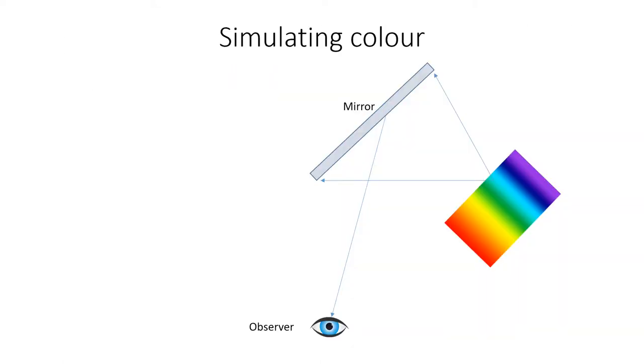As the eye sees color only in terms of its red, green and blue components, it's possible to make the eye believe that it's seeing different amounts of colors by adding suitable amounts of red, green and blue light. If the relative amounts of red, green and blue light are adjusted so that they produce the same response in the cones as the original, then the eye will perceive the added colors as the same color as the original.